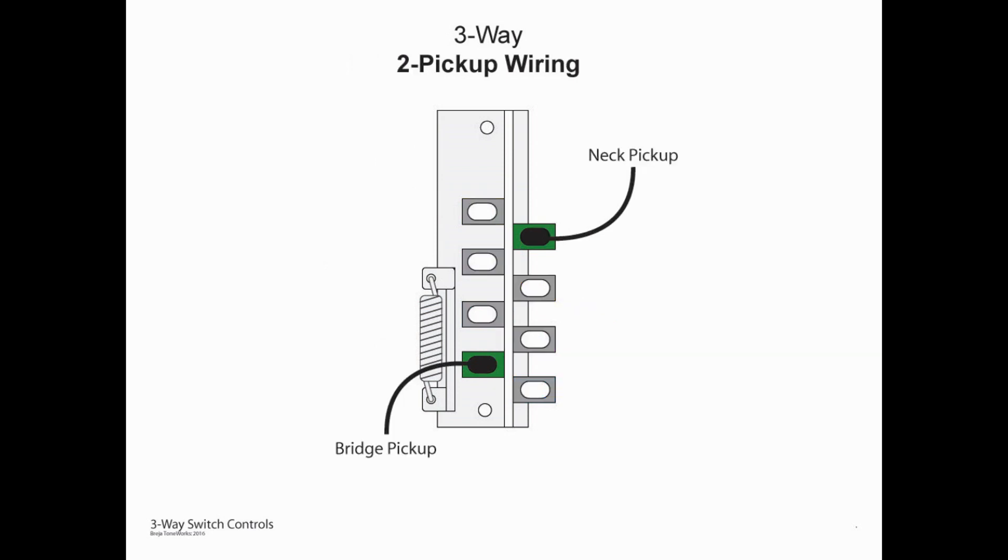Now while the three-way can be used in a three pickup guitar it's mainly used in a Telecaster or a two pickup style guitar and this is how this would be wired up. You'd have your bridge pickup would be connected to A4 and your neck pickup would be connected to B1 and your volume pot would be connected to B4. Now the jumpers in this case are going to look different than if we were trying to wire up three pickups. So for a two pickup wiring jumper scheme we're going to have a wire from A1 to A2, from A2 to B3, and finally from B3 to B4. All right and that's it, that's all we need to wire this up.